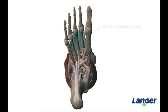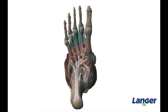The dorsal interossei muscles are bipennate muscles that originate on both sides of metatarsals 2, 3, and 4. The first three muscles insert laterally to the bone of the proximal phalanges 2 to 4. The fourth dorsal interossei muscle, however, inserts medially only. The function of the dorsal interossei muscle is to abduct at the metatarsophalangeal joint.